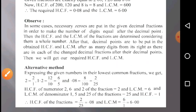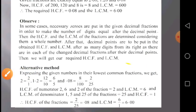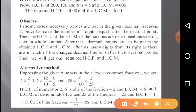Alternative method: expressing the given numbers in their lowest common fractions, we get 2/1, 6/5, and 2/25. HCF of numerators 2, 6, and 2 is 2. LCM of denominators 1, 5, and 25 is 25. So HCF of the fractions is 2/25, which equals 0.08, and LCM is 6/1, which equals 6.00.